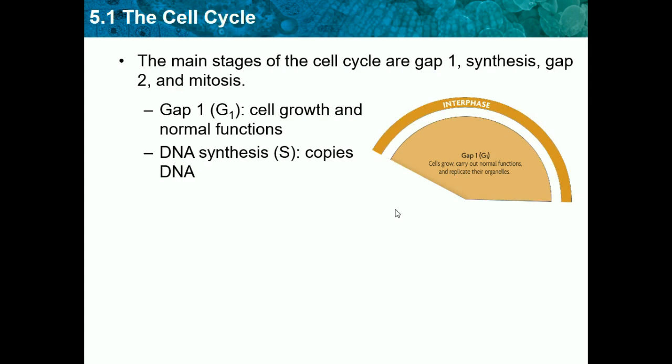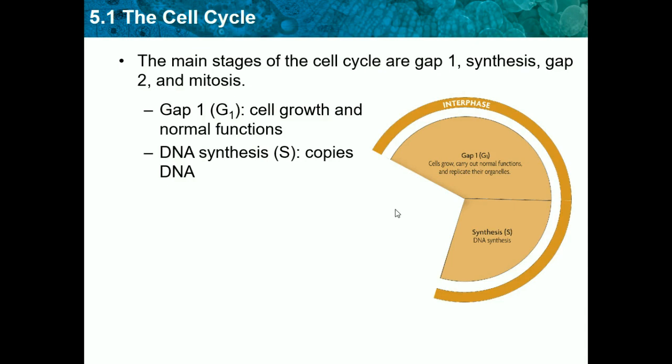Next we have DNA Synthesis, abbreviated as S. In this stage, the cell copies its DNA and basically doubles all of it. For example, if it had two copies of DNA, it would get four — though that's just an illustration. The cell must be preparing for something, because why else would it need two copies of the same DNA? The reason is so it can prepare to divide or split, because when cells divide, they make an additional cell that is identical to the first one. So the cell must copy its DNA first in order to pass it on — that's what happens in the Synthesis phase.